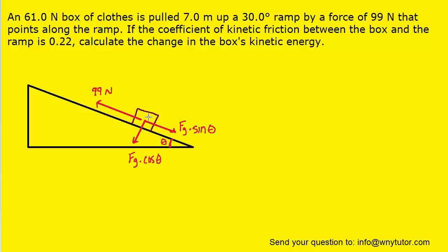There are still a couple more forces. We have the surface of the ramp pushing up on the box of clothes — that's known as the normal force — so we show a force pointing upward and label it Fn. The question notes that there is kinetic friction between the box and the ramp, so we include a kinetic frictional force. Because the box is sliding up the ramp, kinetic friction opposes that motion and points down the ramp. We label that Fk for kinetic frictional force.